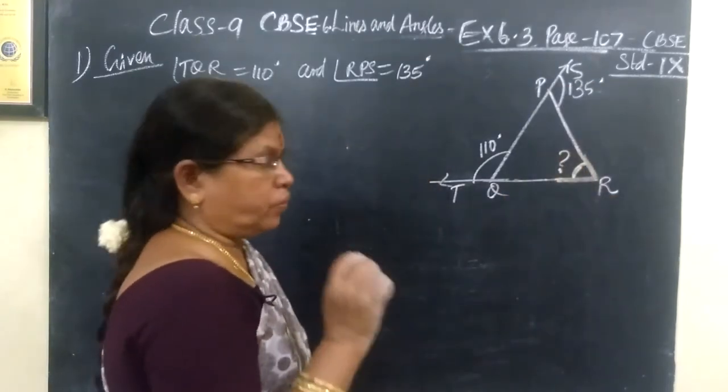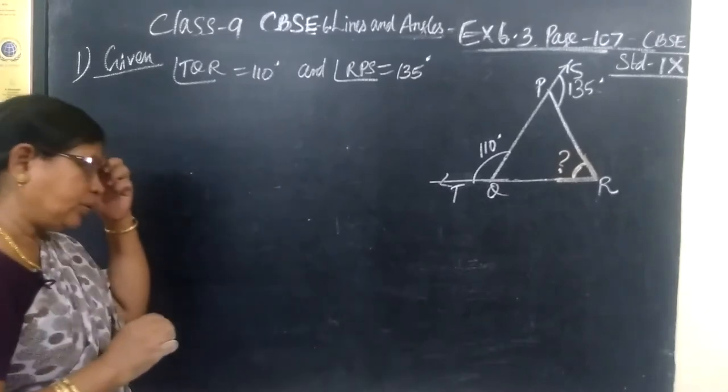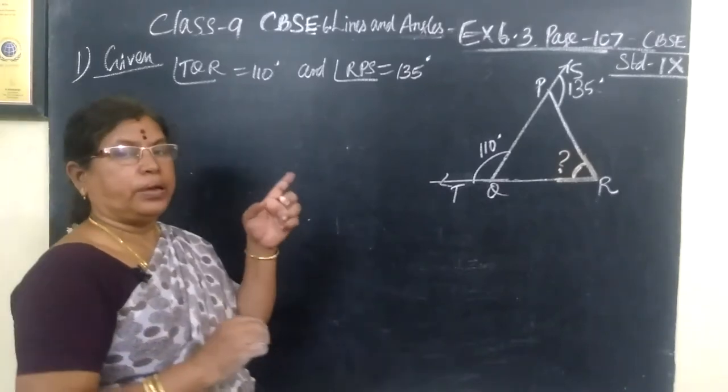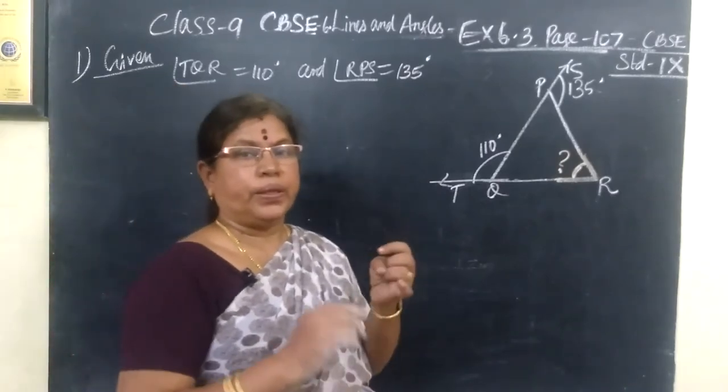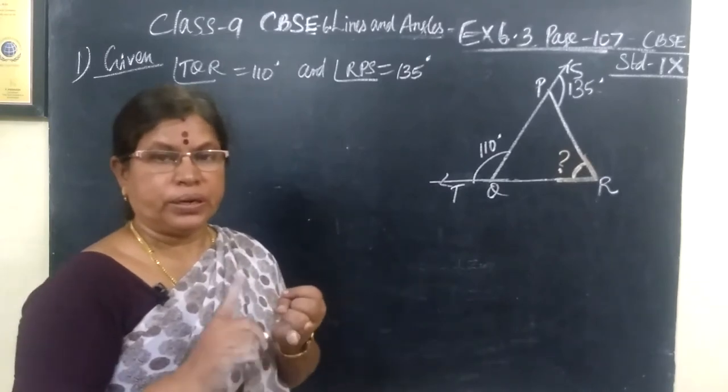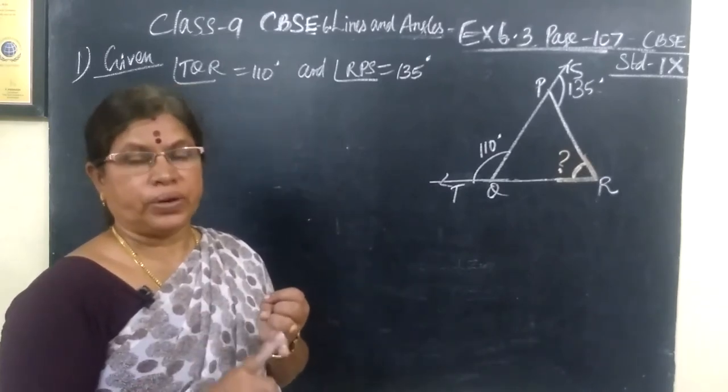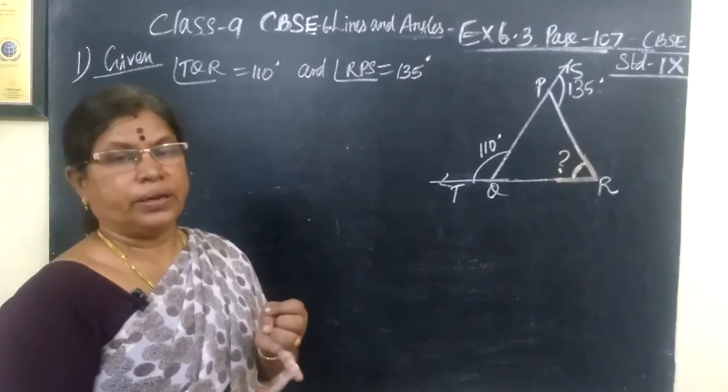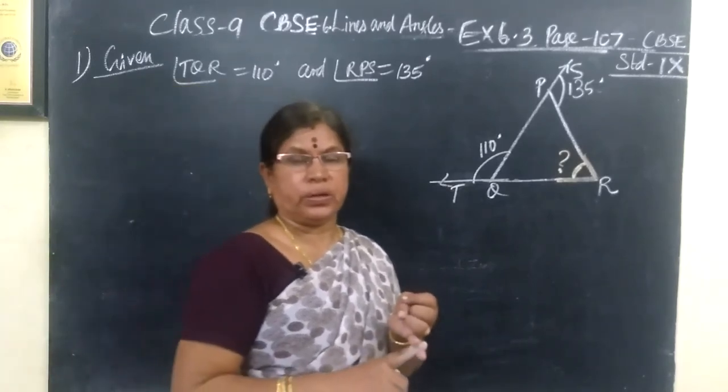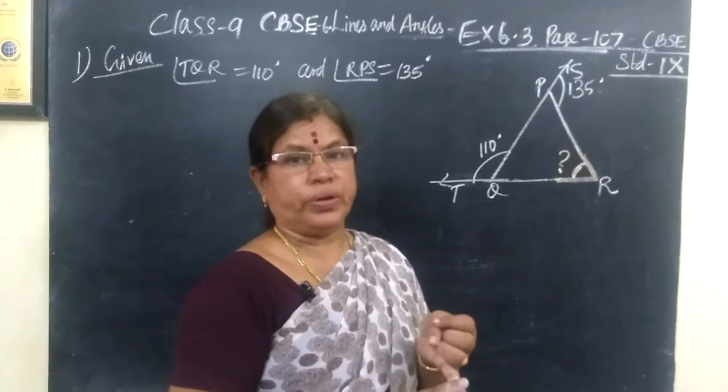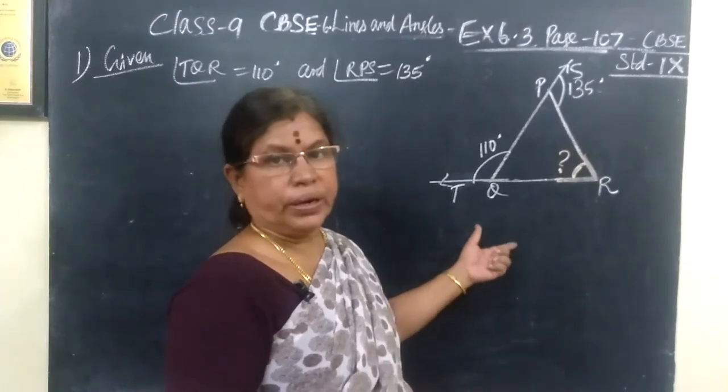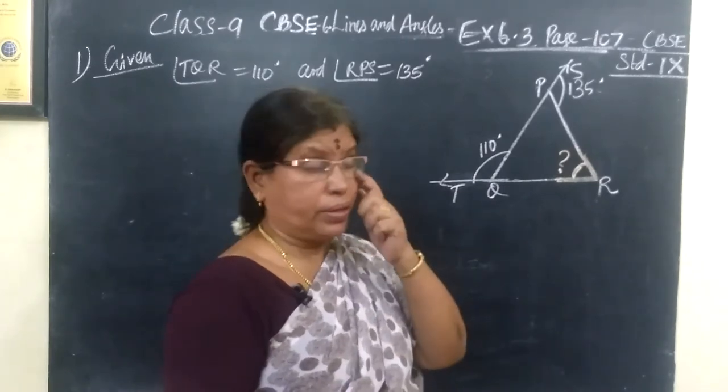For this, in Exercise 6.3, we must know the result that the sum of the angles of a triangle is 180 degrees. This is given as book work in the question. For that, the proof we also need. That we take later. Now we see the exercise only.